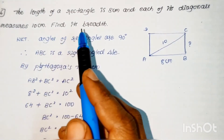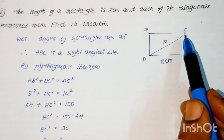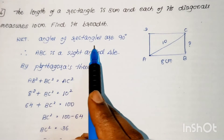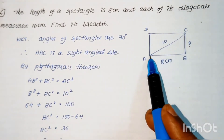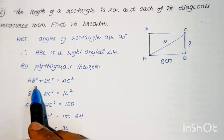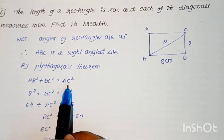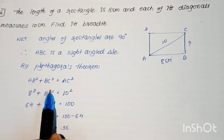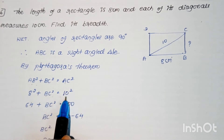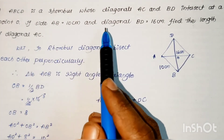Problem: The length of a rectangle is 8 cm and each diagonal measures 10 cm. Find its breadth. Since all angles of a rectangle are 90 degrees, the triangle formed by the length, breadth, and diagonal is a right-angled triangle. Applying the Pythagorean theorem: AB² + BC² = AC², so 8² + BC² = 10², giving BC² = 100 − 64 = 36, therefore BC = 6 cm.